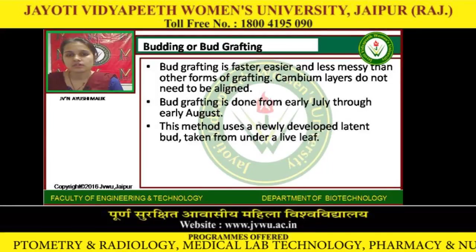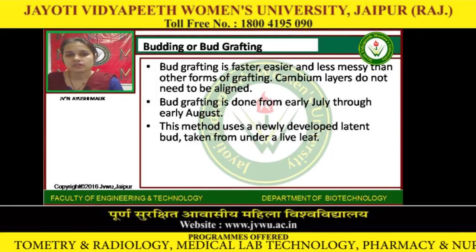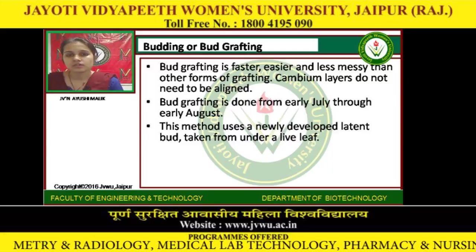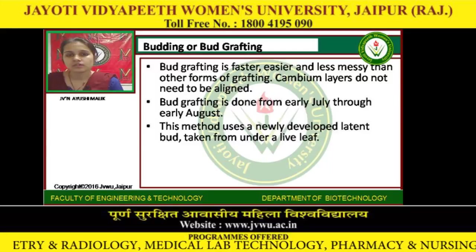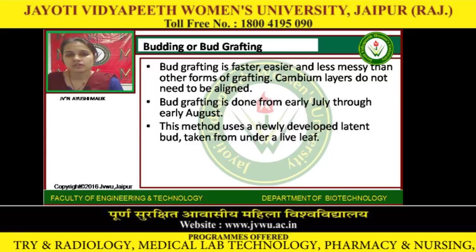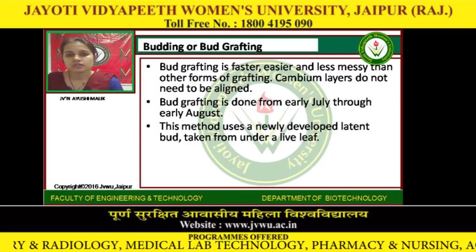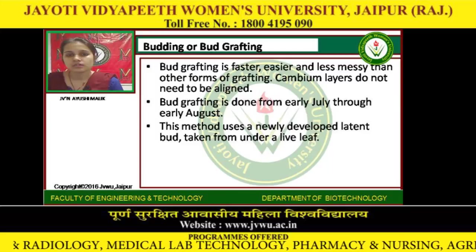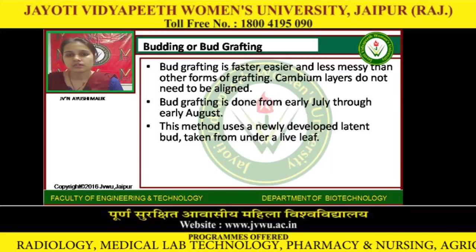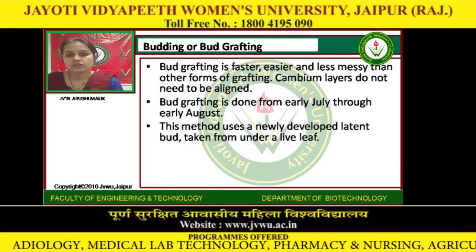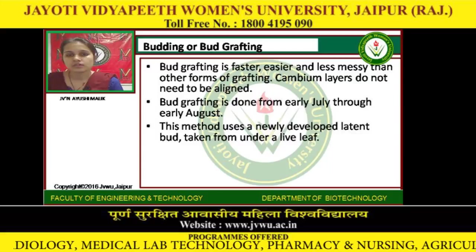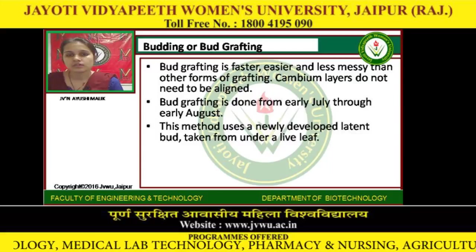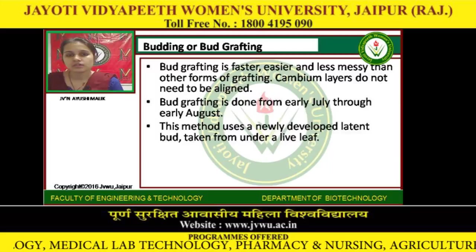Bud grafting is faster, easier, and less messy than other forms of grafting. Cambium layers do not need to be aligned. Bud grafting is done from early July through early August. This method uses a newly developed bud taken from under a live leaf.